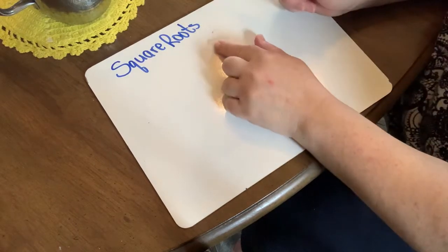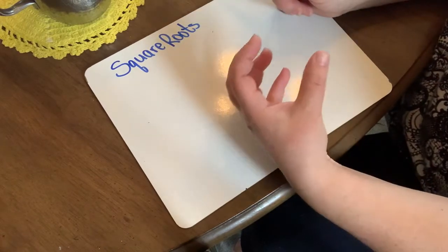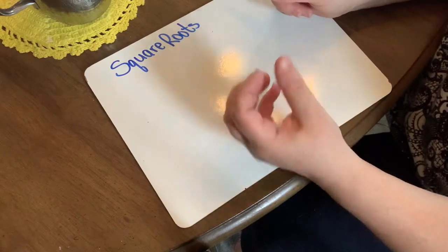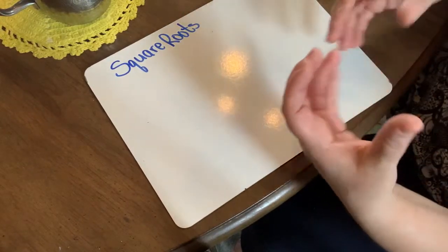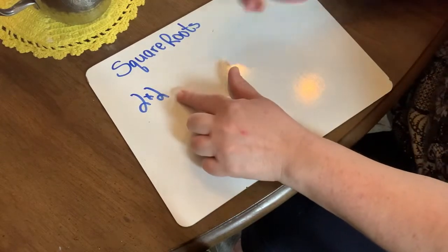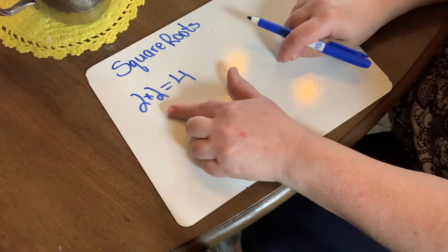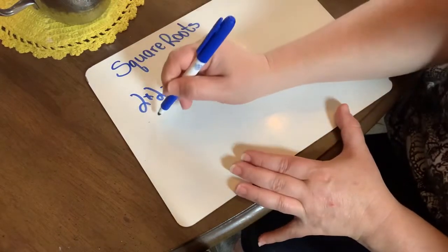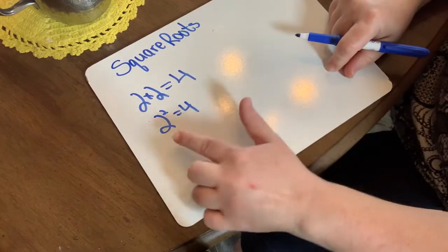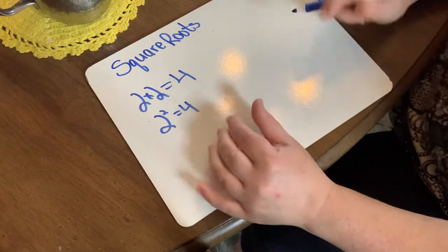Today we're going to talk about roots, particularly square roots and cubed roots. A square root is two factors that are the same number. So let's look at 2 times 2 — these are factors, they're the same number, and 2 times 2 equals 4. Another way of writing 2 times 2 is 2 to the second power, so 2 squared equals 4.